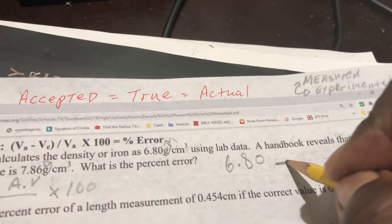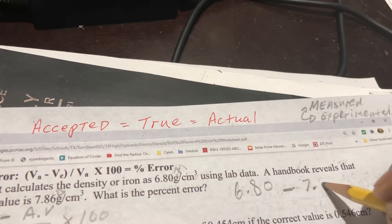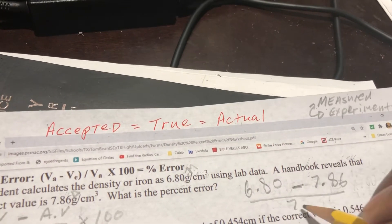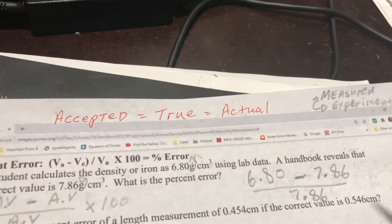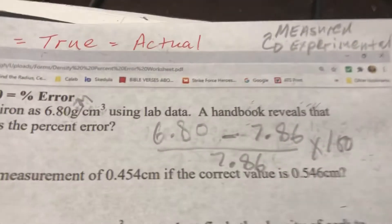You're going to write down 6.80. And what's going to happen is you're going to subtract from that 7.86 and divide again by 7.86 and you're going to times that by 100 and you're going to take a breath.